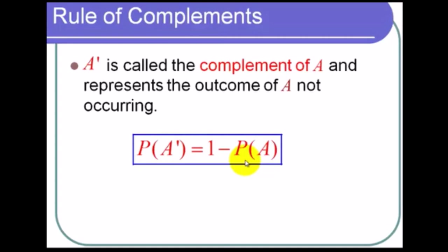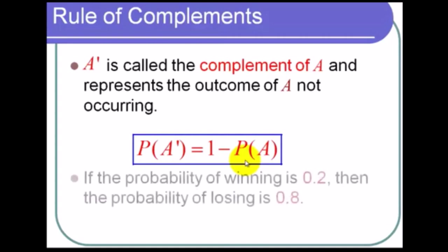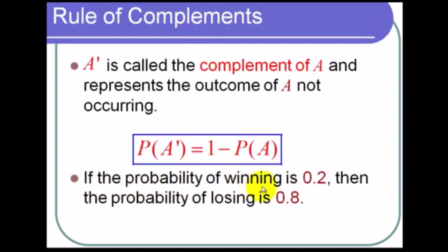This will make total sense as soon as you see an example. If the probability of winning the game is 0.2, so 20%, then the probability of losing is 0.8 or 80%. It's a very, very simple rule, this rule of complements, but it's also probably the most important and useful rule of probabilities that we're going to have in this class. You're going to see it over and over again throughout the course.